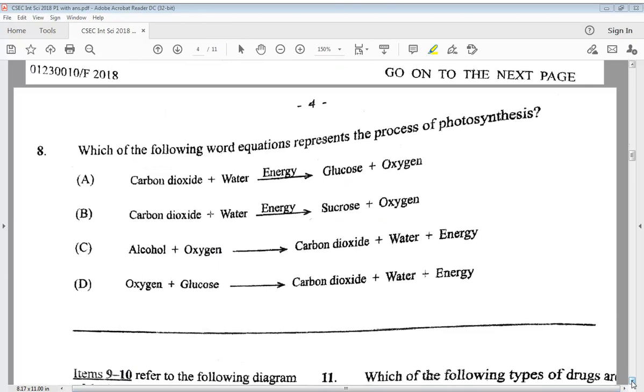Let's go to number 8. It says, which of the following word equations represents the process of photosynthesis. So looking at them, we could tell that the answer is going to be A, carbon dioxide plus water, which gives energy, glucose plus oxygen.